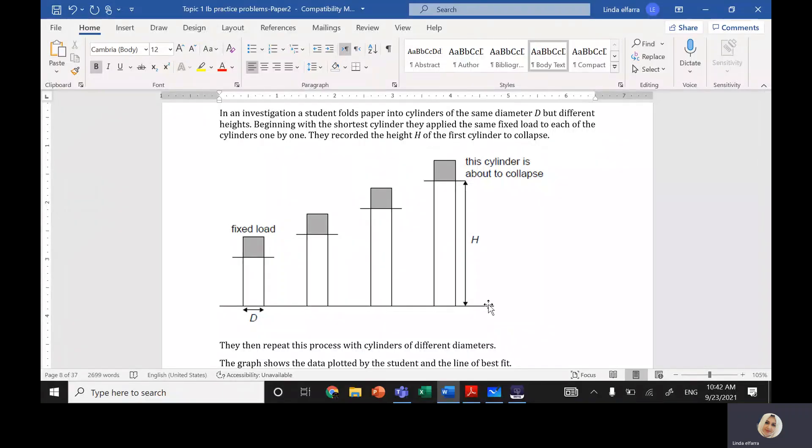Question number three, topic one, paper two: measurements and uncertainty. The question says a student did an investigation by folding papers into cylinders of different heights. They have the same diameter but different heights, and he applied a weight or fixed load on each one to record the height at which the first cylinder will collapse.